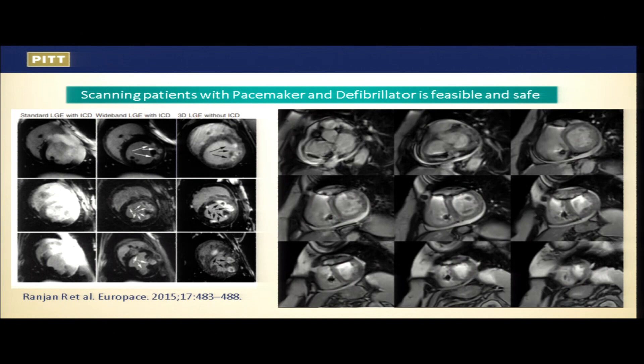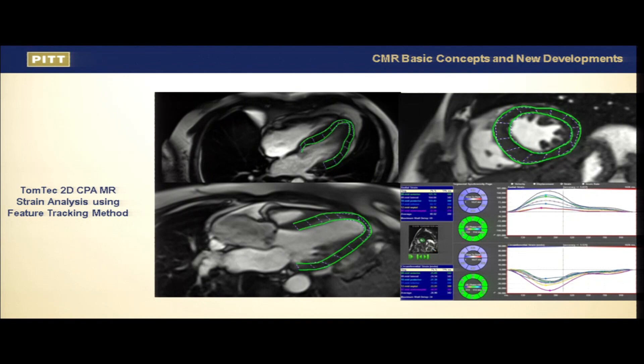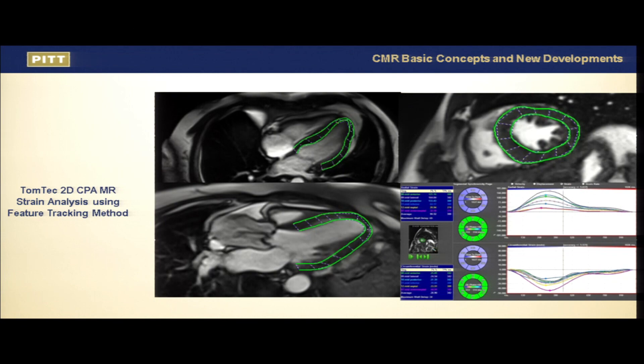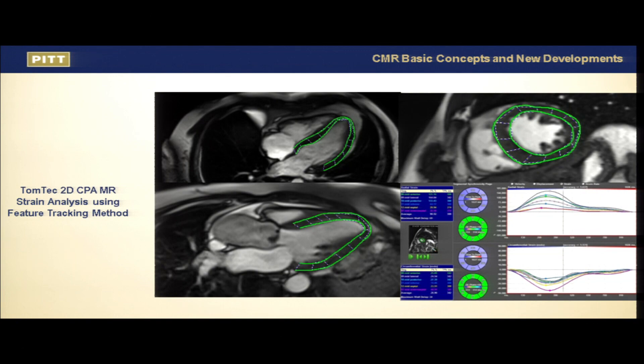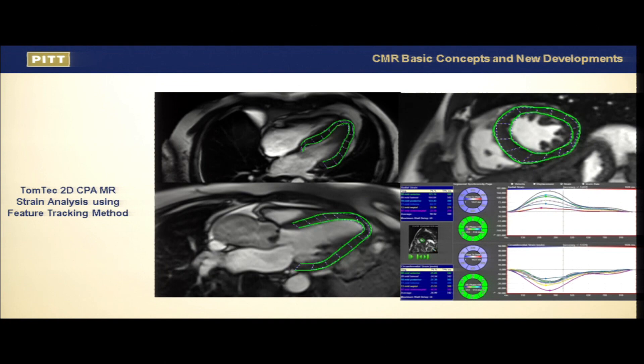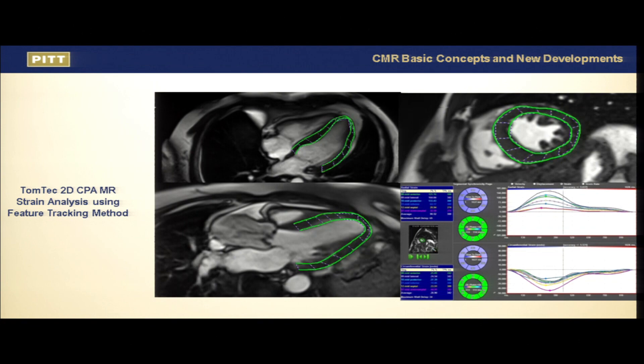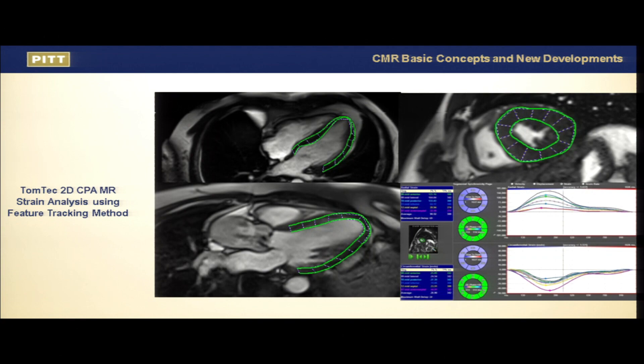Some other interesting developments involve very simple post-processing. Feature tracking — strain imaging on regular CINE images — is now feasible. TomTec, now licensed by Metis, and Circle are both using this. This has enabled strain imaging on regular CINE, which previously required special pulse sequences such as myocardial tagging — time-consuming for both acquisition and post-processing. Now we can do it with the same images acquired on a conventional clinical basis.